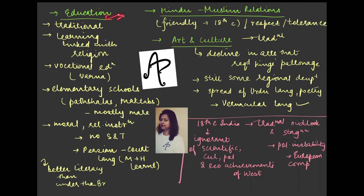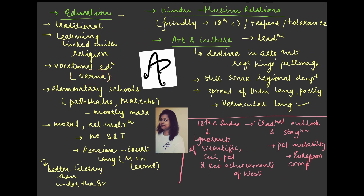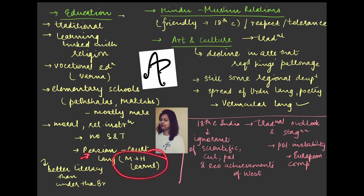On education: traditional education was in place before the British introduced modern or English education. Learning was linked to religion and vocational training based on the varna system — one could only pursue the occupation of their birth family. Elementary schools like patshalas and maktabs existed, attended mostly by males. Education focused on moral and religious instruction with no emphasis on science and technology. Persian was the court language during the Mughal period, so both Muslims and Hindus needed to learn it.